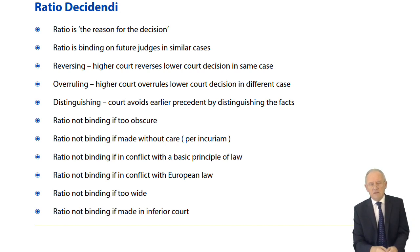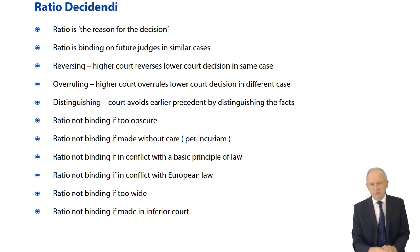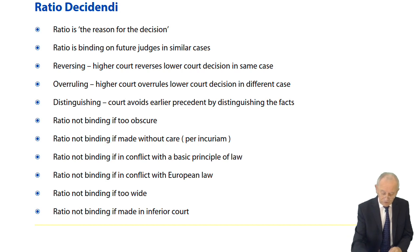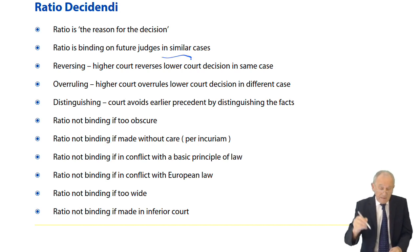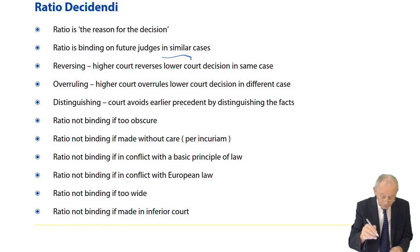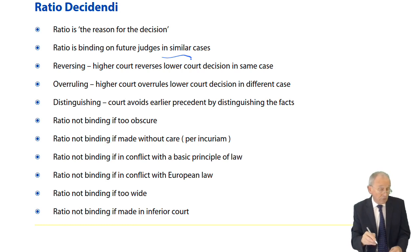So ratio decidendi is really important and clearly distinct from obiter dicta. It's binding on future judges in similar cases. But then we have these three concepts: reversing, overruling, and distinguishing.